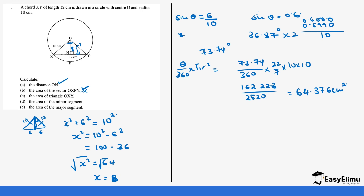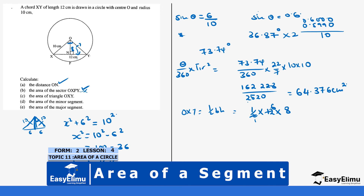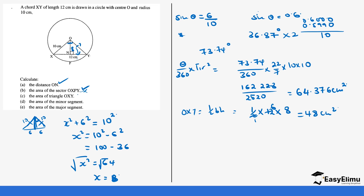Third, find the area of triangle OXY. Area equals half base times height: half times 12 times 8 equals 6 times 8 equals 48 centimeters squared. The area of the minor segment is the area of the sector minus the area of the triangle: 64.376 minus 48 equals 16.376 centimeters squared.